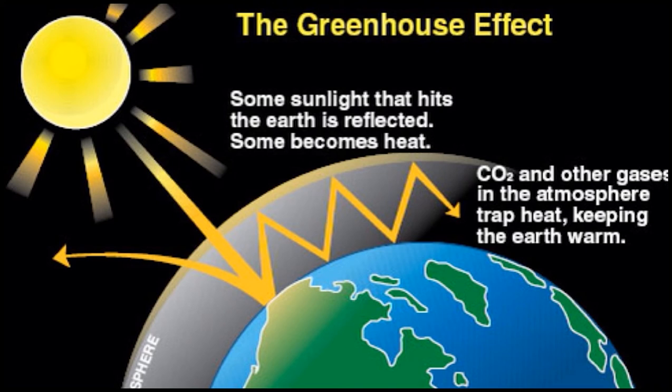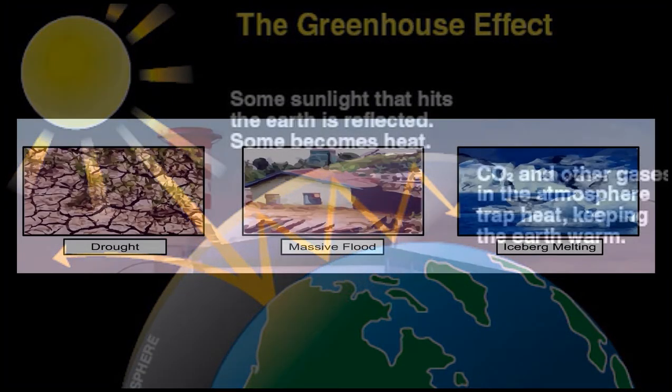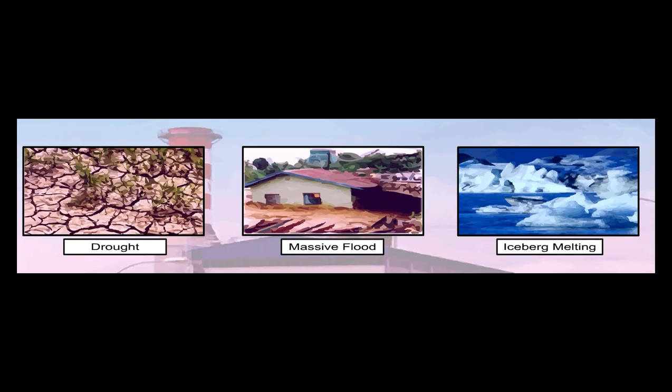An increased amount of heat striking the earth from the sun is being trapped in the atmosphere and not radiated out into space. As the earth gets warmer due to the greenhouse effect, the atmospheric temperature will increase. The rise in global temperature changes rainfall patterns and causes drought, floods, and also causes ice in the polar regions to melt.